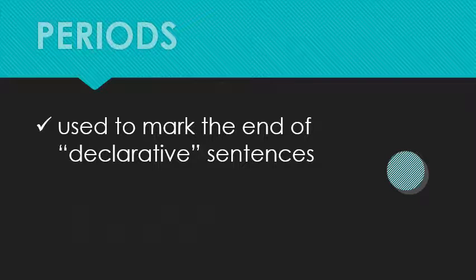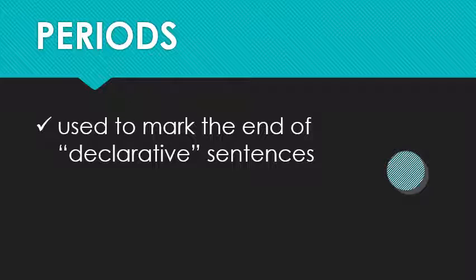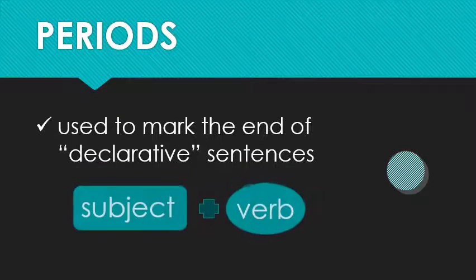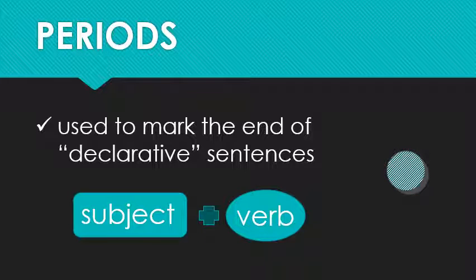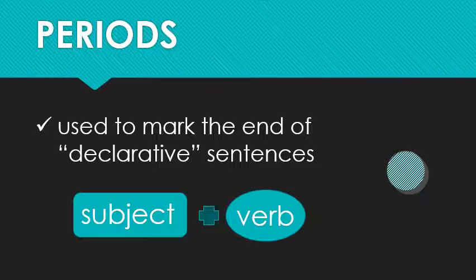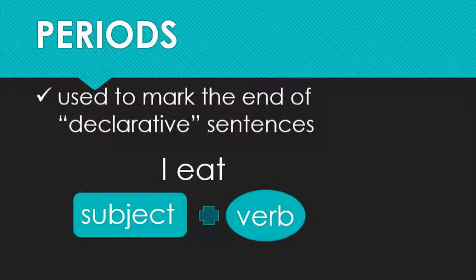Periods also indicate abbreviations, which we'll talk more about in the next video. So, you need a period at the end of each sentence sounds simple enough, yet the problem for many new writers is actually, how do you know when your sentence should end? To solve this problem, you need to become an expert at finding the two essential elements of a sentence.